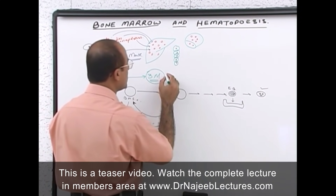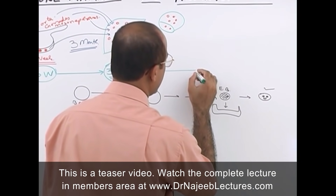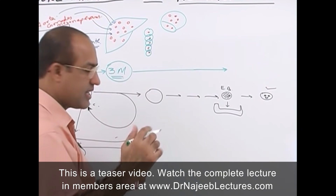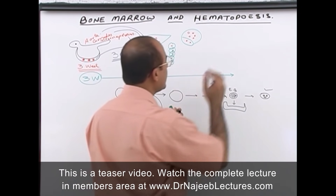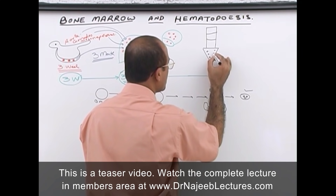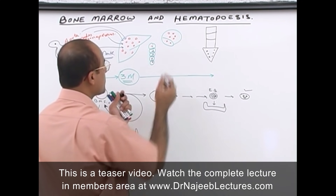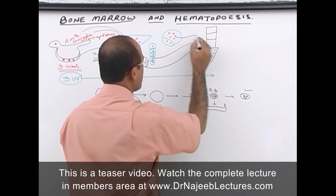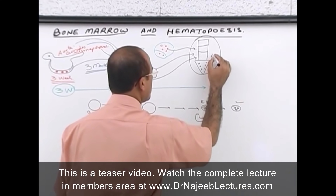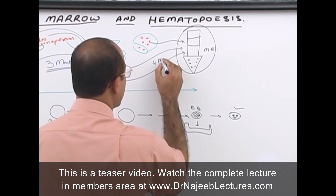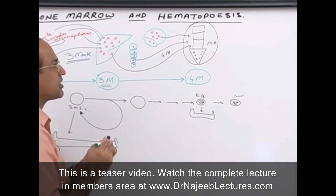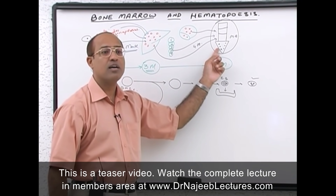This process continues in these organs up to just before birth. The liver will stop producing hematopoietic activity because around the 4th month of fetal life, from the liver, lymph nodes, and spleen, stem cells start migrating to the bone marrow. So at the 4th month of fetal life, hematopoietic stem cells appear in the bone marrow and hematopoiesis starts there.